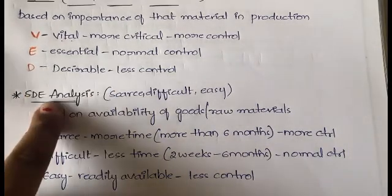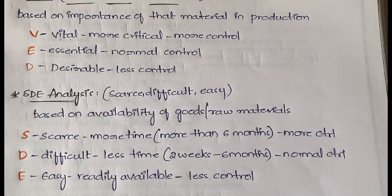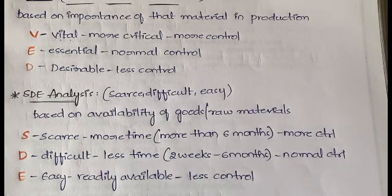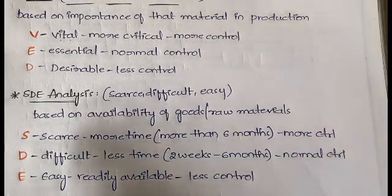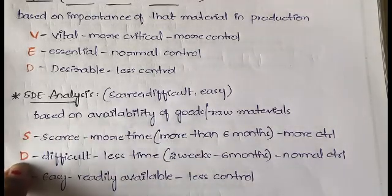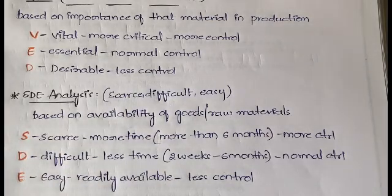SDE stands for Scarce, Difficult, and Easy. This is based on the availability of goods or raw materials in the market — how easily or how difficult it is to buy those products. S stands for Scarce, meaning very difficult to obtain; these materials are available in very small amounts and you may have to wait more than six months to get them.